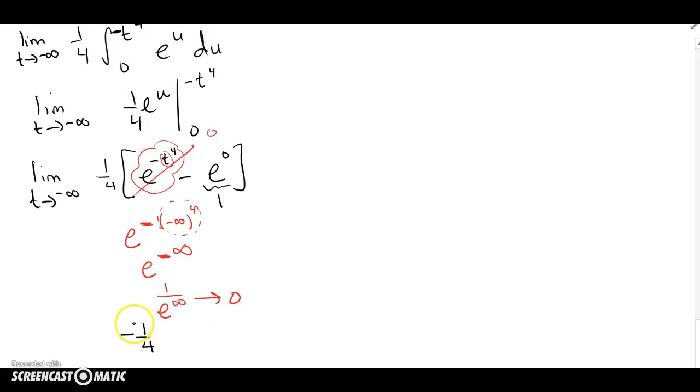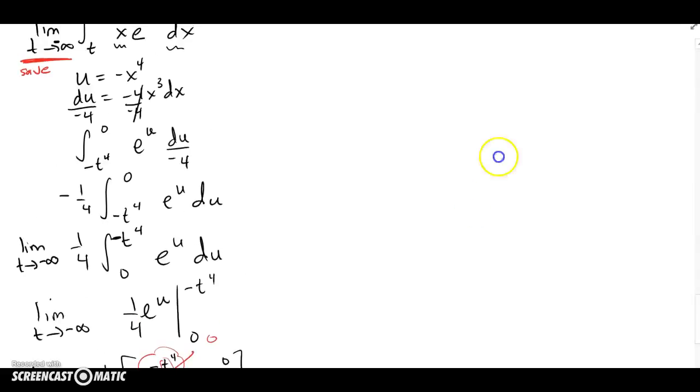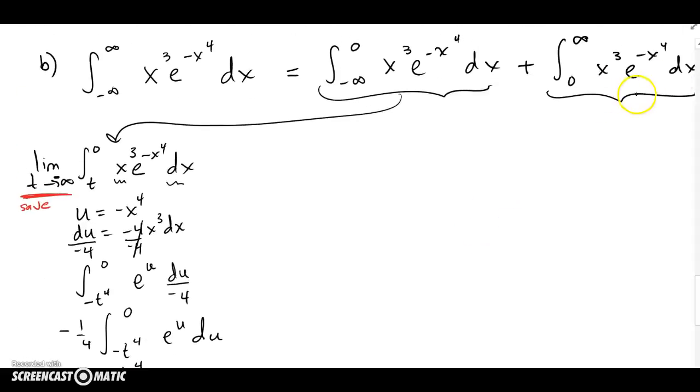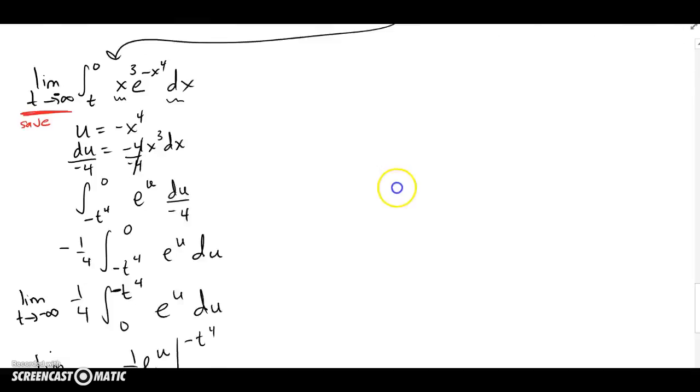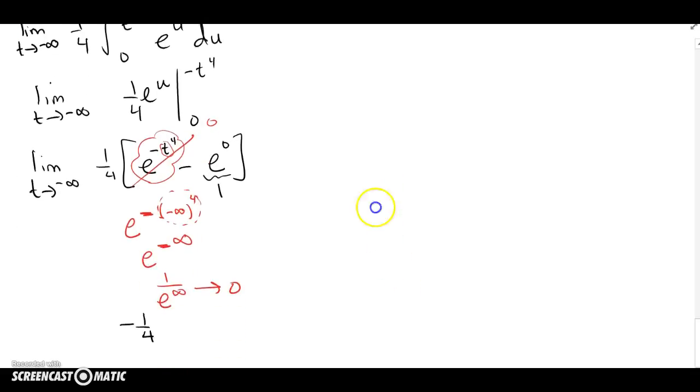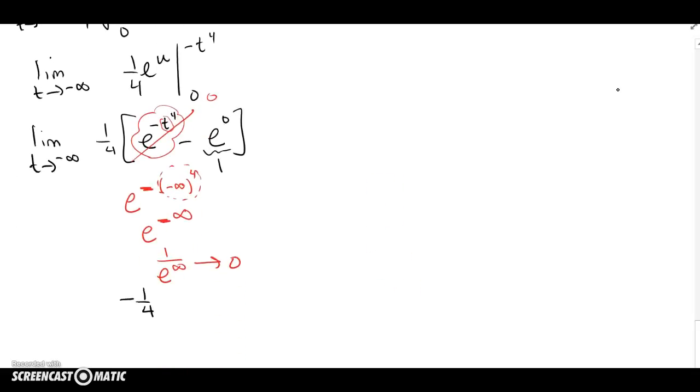If I had gotten a divergent for this piece of the integral, I would have stopped. I would not have gone and even bothered looking at the second piece. So if the first piece gave you a convergent, go on and look at the second piece. If it gives you a divergent, that's it, you're done, it's divergent, don't even look at the second piece.